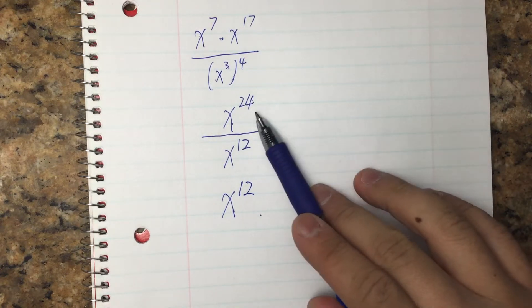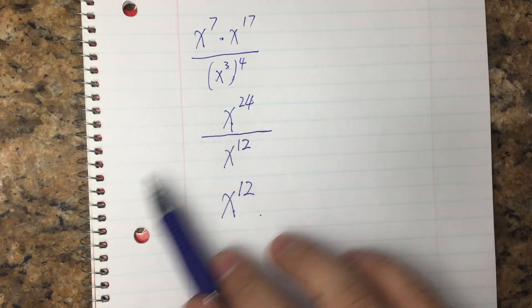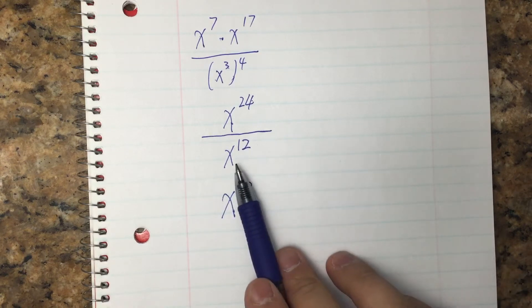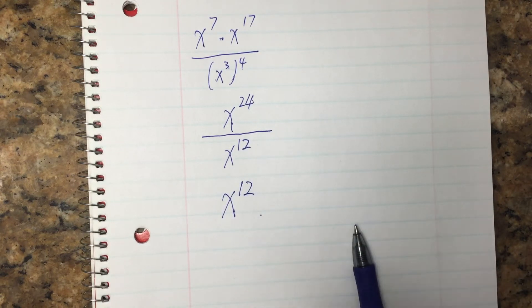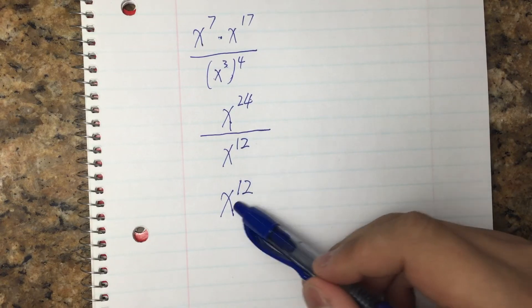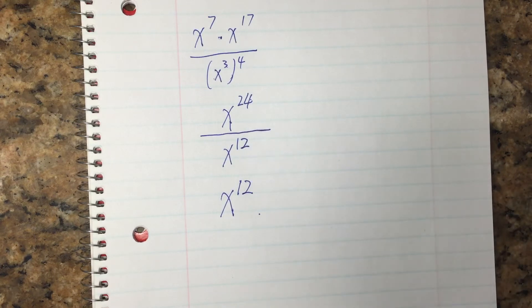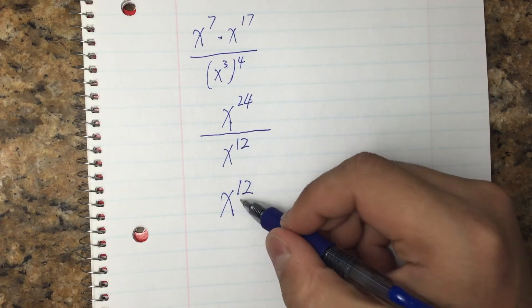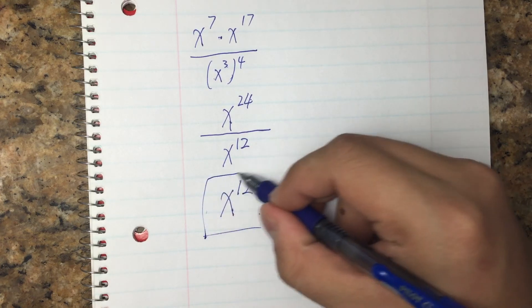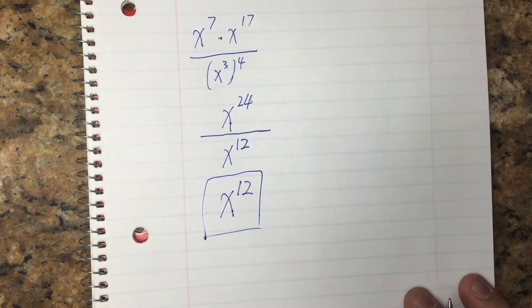So intuitively, we have 24 of the x. We take out by dividing 12 of the x, left over 12 of the x. So that's why when we're dividing, we need to subtract the power. x to the 12th is the final answer.